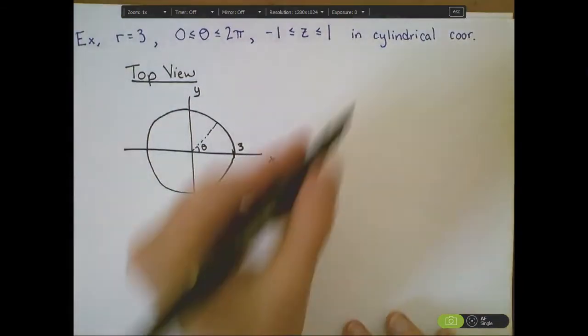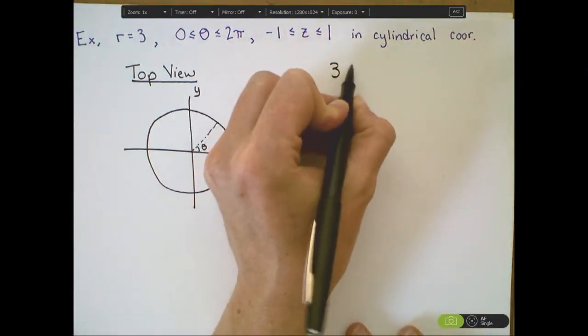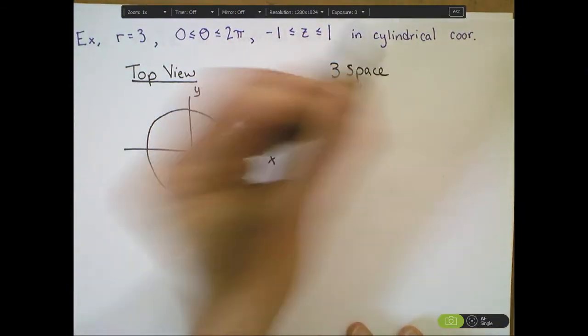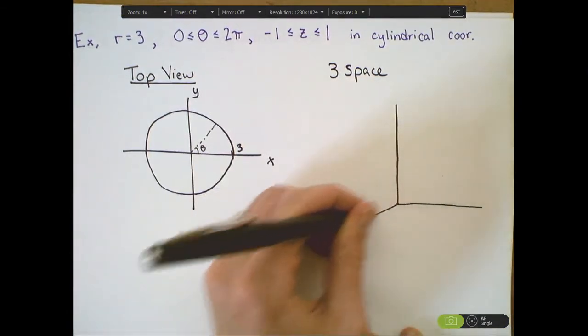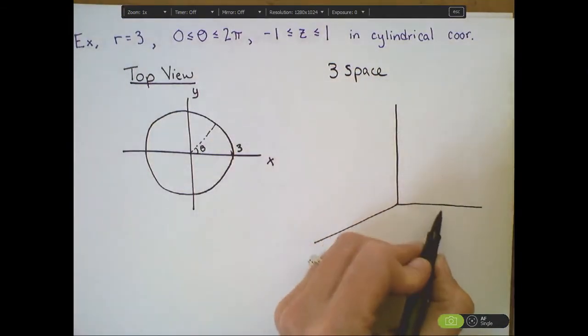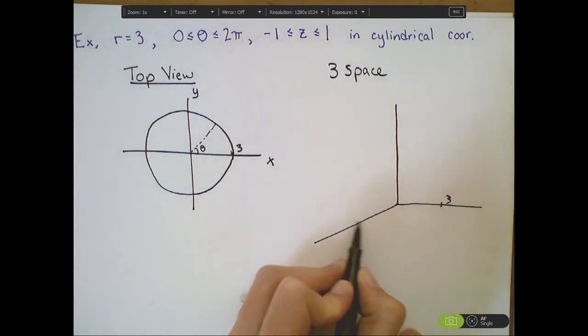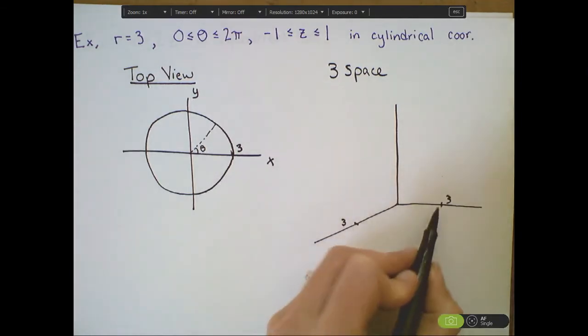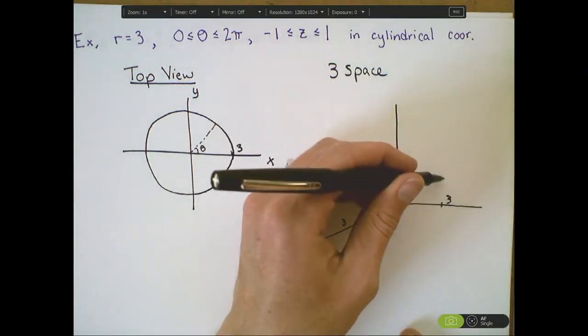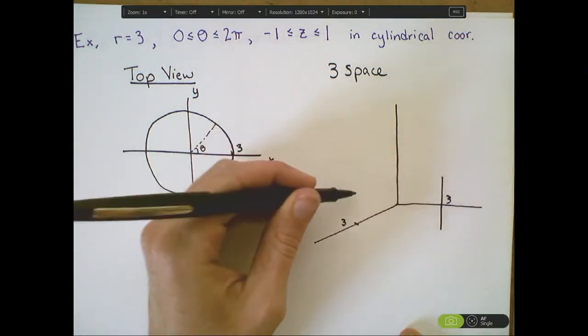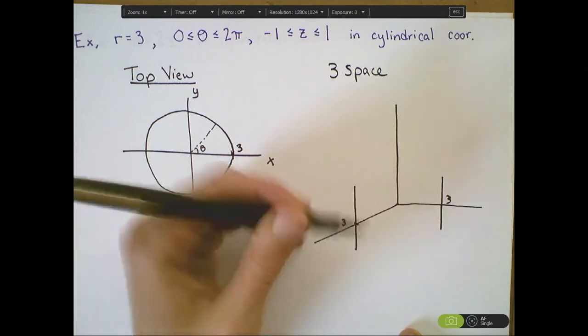And then looking in our 3 space, we know that the base of this object is this circle in the xy-plane of radius 3. And the z-values are allowed to vary from negative 1 to 1 means that I'm going to trace out a cylinder.